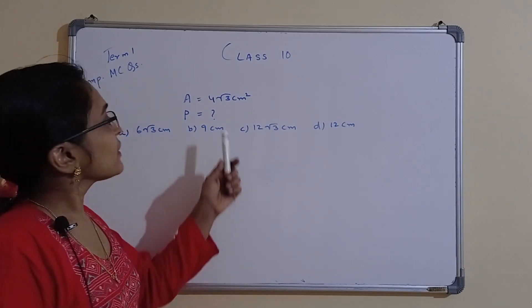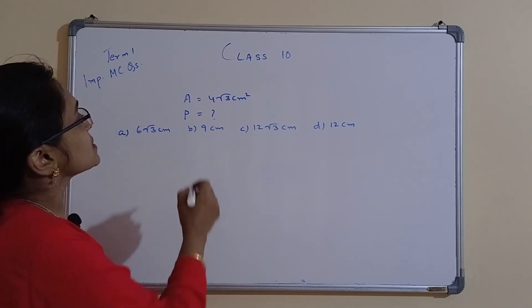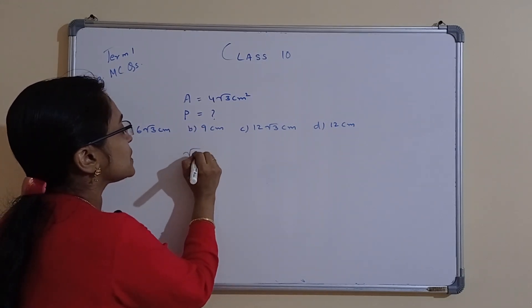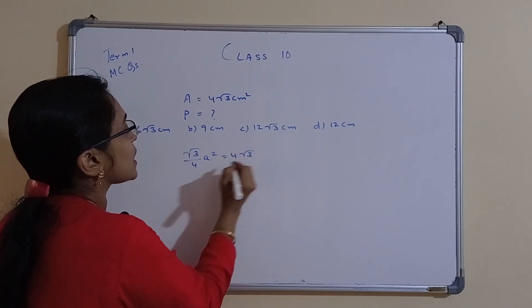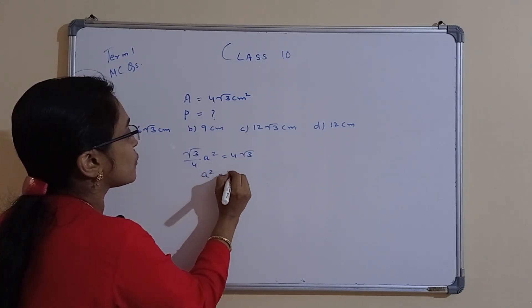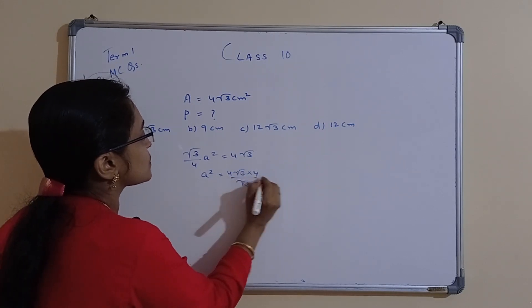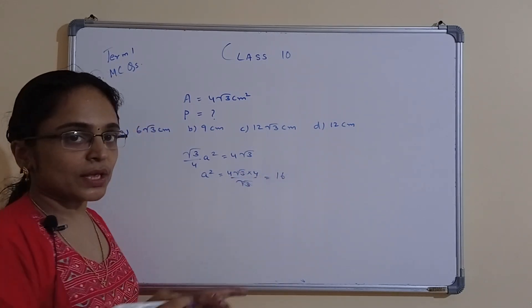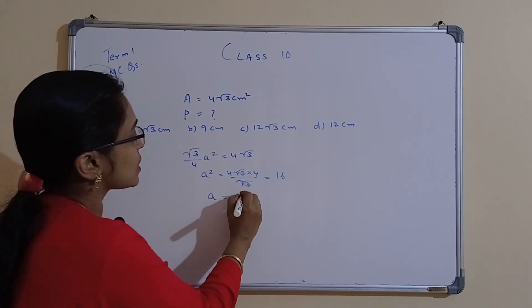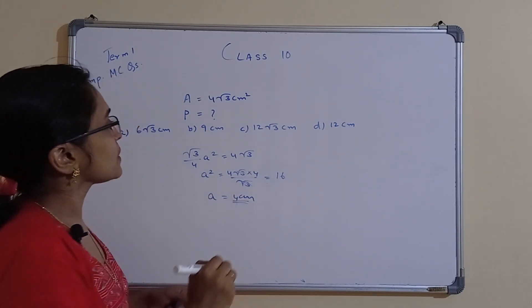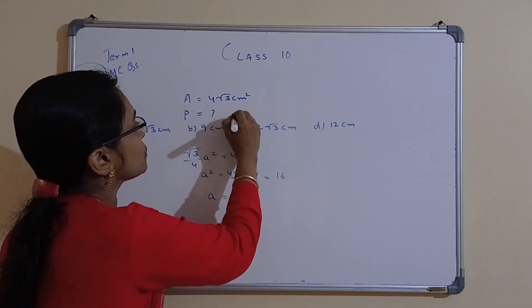Next: area of a triangle is 4√3 cm². Find its perimeter. Since area = (√3/4) a² = 4√3, we get a² = 16, so a = 4 cm. Perimeter = 3 × 4 = 12 cm.